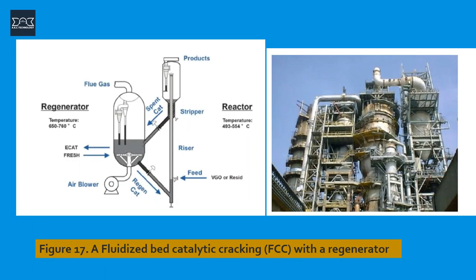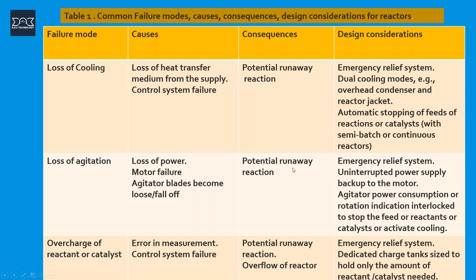In catalytic reactors, we've got the risers, we've got the products, and the products are fed through to the distillation column. The spent catalyst is regenerated in the regenerator. There are various causes in cooling reactor failures which could lead to runaway reactions — these need to be controlled, such as loss of agitation, loss of cooling, and overcharge of reactants. An example of this is what happened in the T2 Laboratories runaway reaction incident.